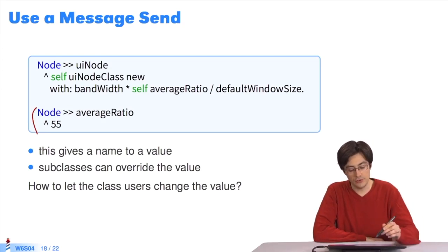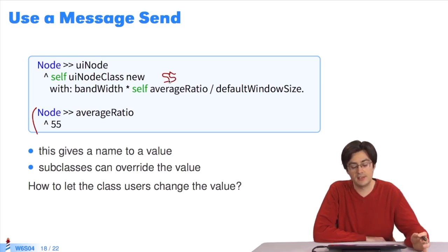Another advantage is that previously the value 55 was written here. Now it's called self-average ratio. This means we replaced a numerical value by a name, and I now know what the value 55 corresponds to. I know it means average ratio, and when I read the code, I understand. So having many small methods helps to read the code.